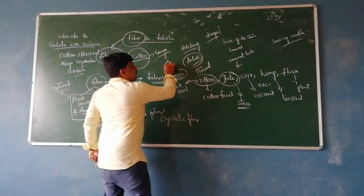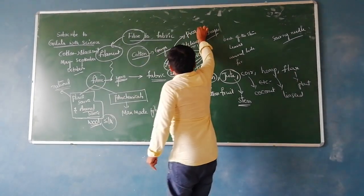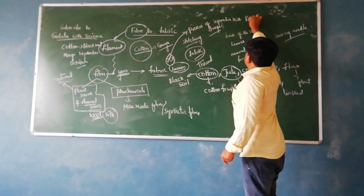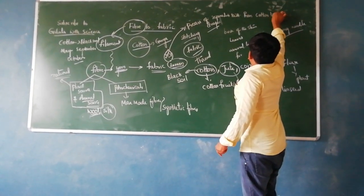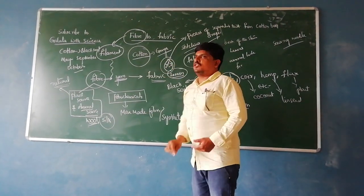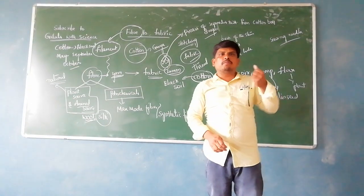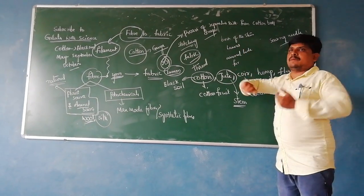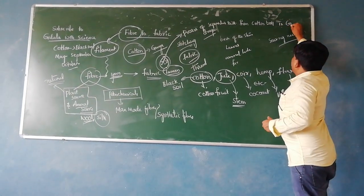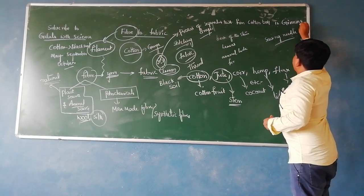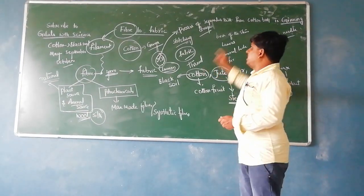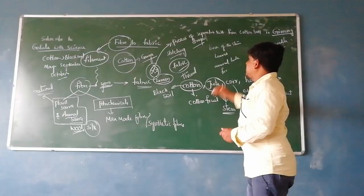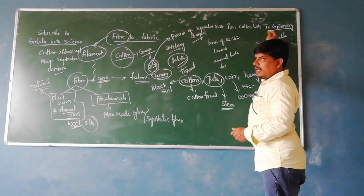The process of separating seeds from cotton is called ginning. Ginning is the process of removing the seeds from the cotton ball.